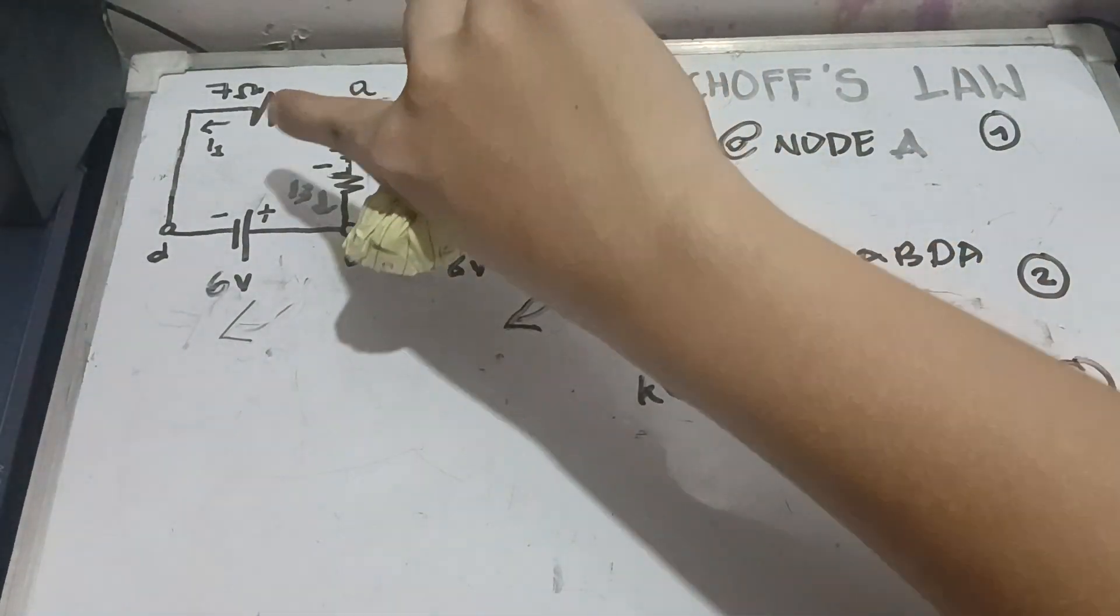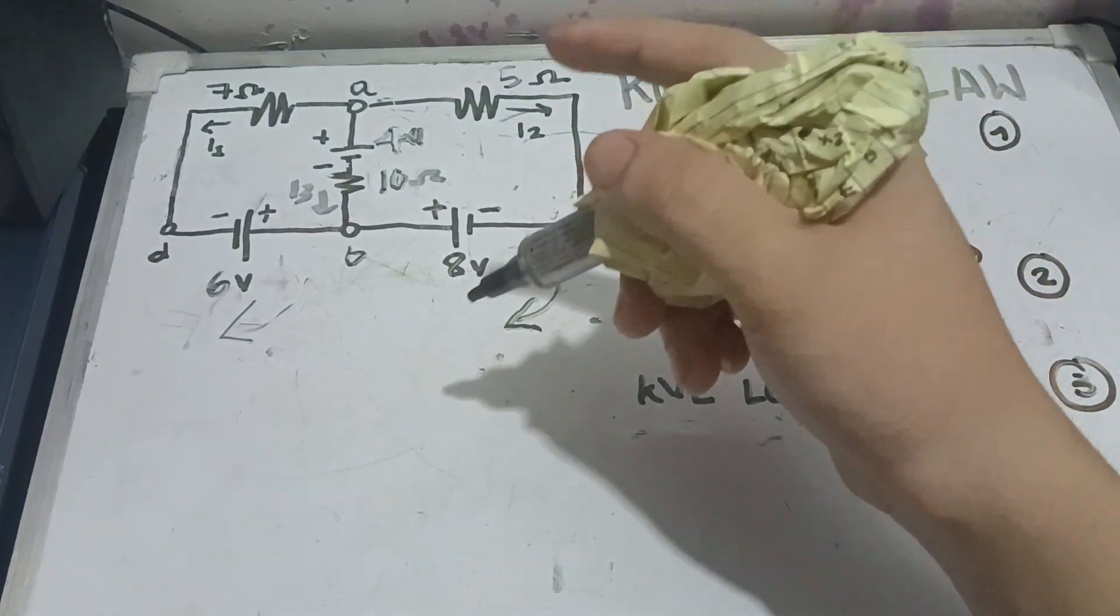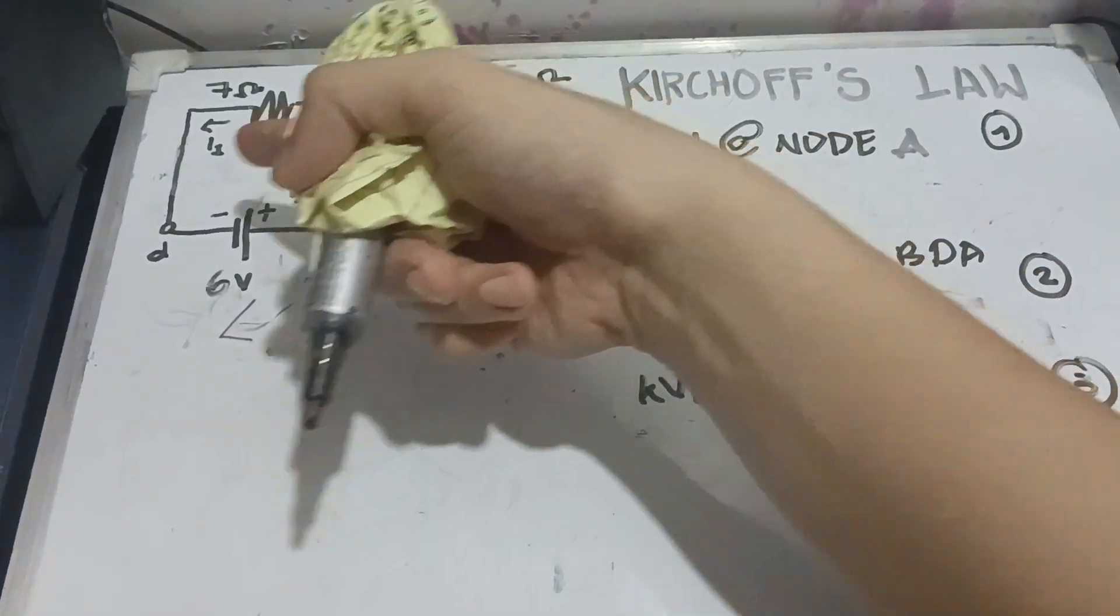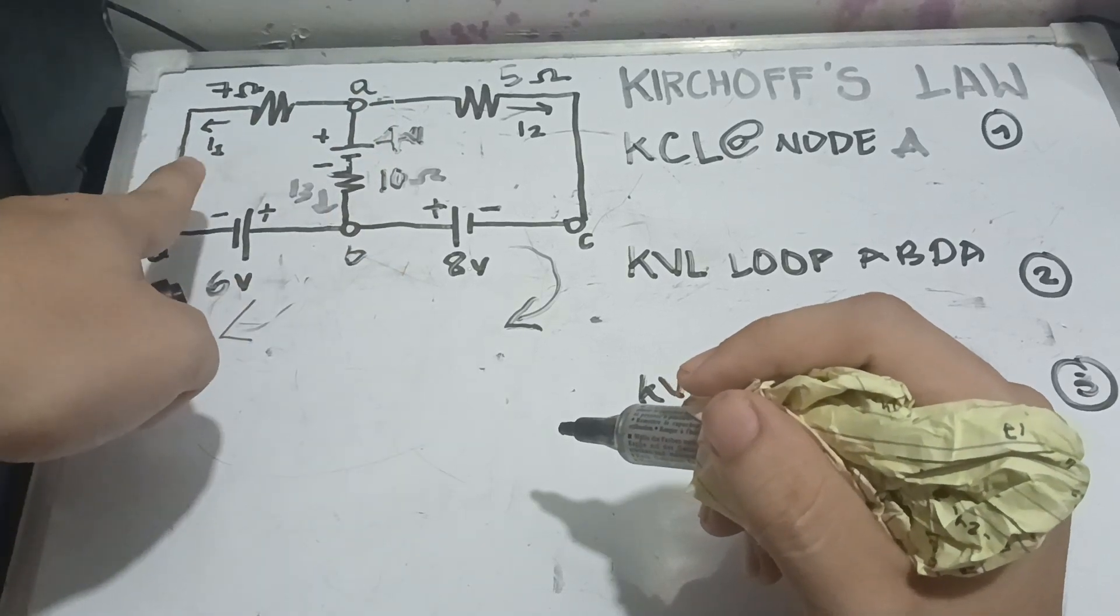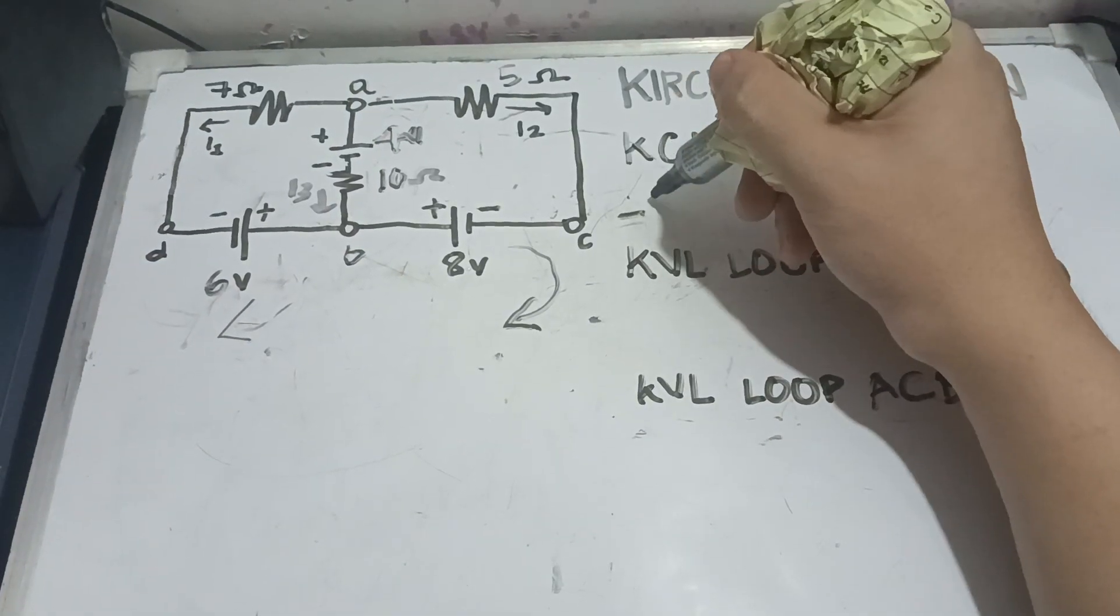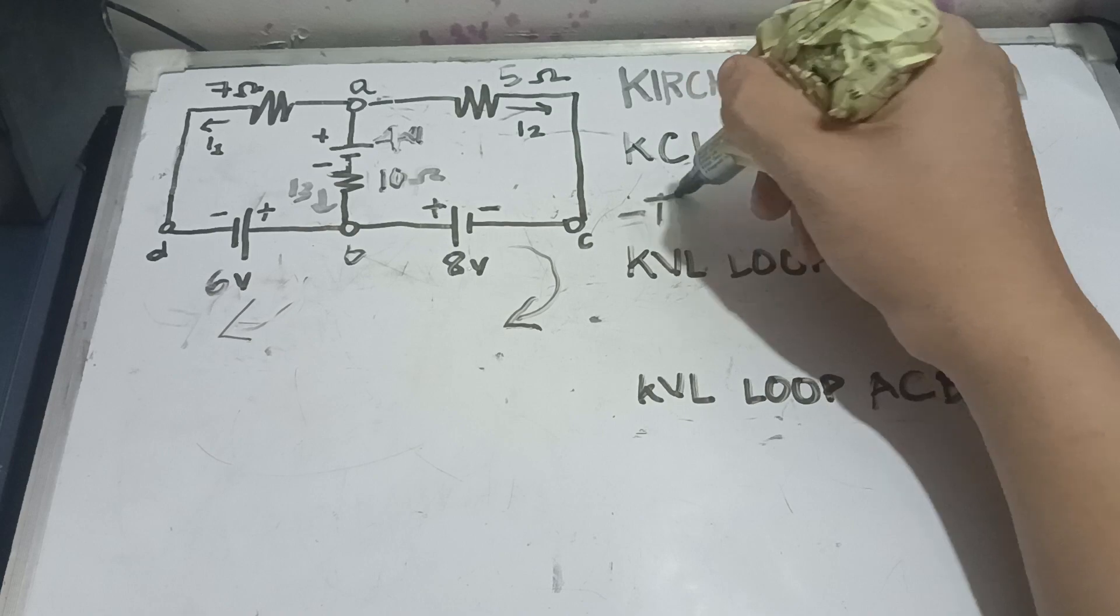Let's start with I1. I1 is going away from our node A. As you can see, this is our node A and this is our I1. So, it's going to be negative I1 or negative 1.